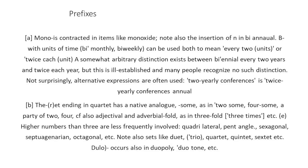The -r ending in 'quartet' has a native analogue in '-some' as in 'twosome,' 'foursome,' meaning a party of two or four. Cross-reference also with the adjective and adverbial suffix '-fold,' as in 'threefold,' 'three times,' etc. Higher numbers than three are less frequently involved: 'quadrilateral,' 'pentangle,' 'hexangle,' 'septuagenarian,' 'octagonal,' etc.